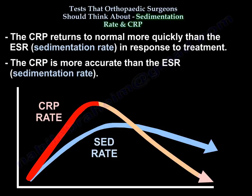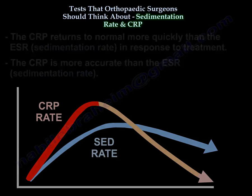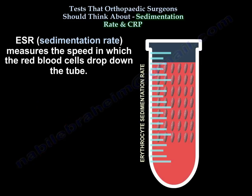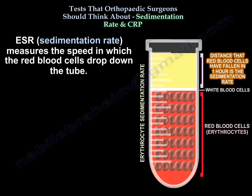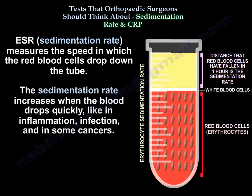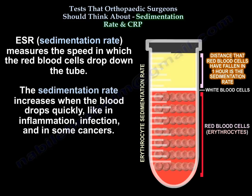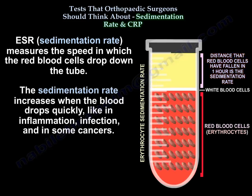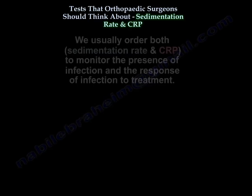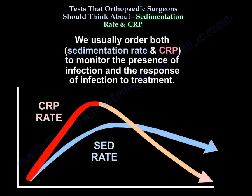The erythrocyte sedimentation rate measures the speed at which blood drops down a tube. The sedimentation rate increases when blood drops quickly, as in inflammation, infection, and some cancers. We usually order both sedimentation rate and CRP to monitor the presence of infection and the response of infection to treatment.